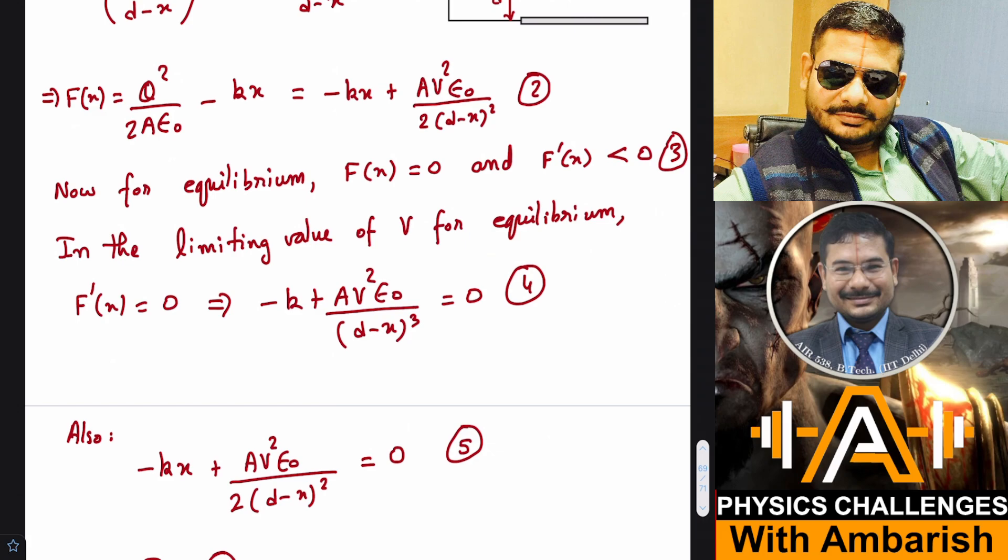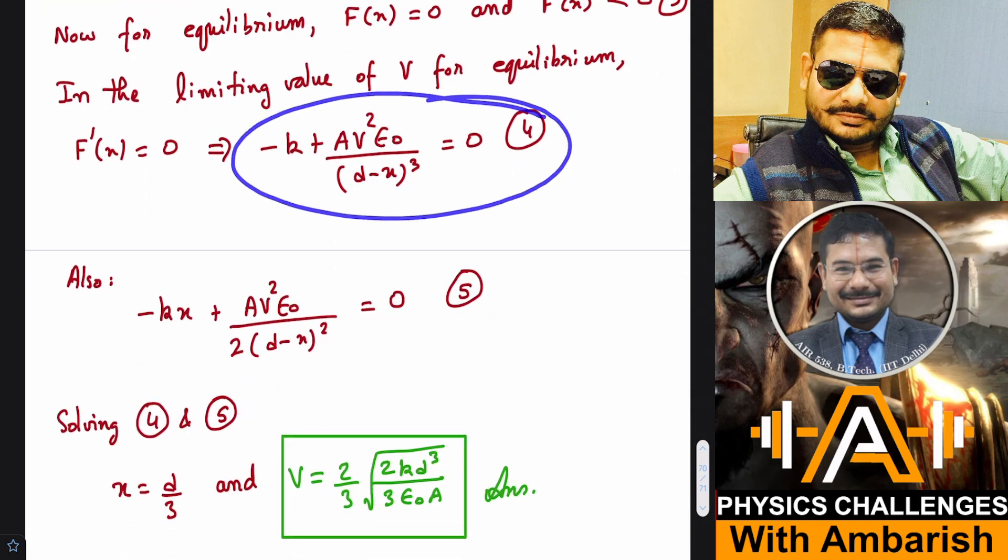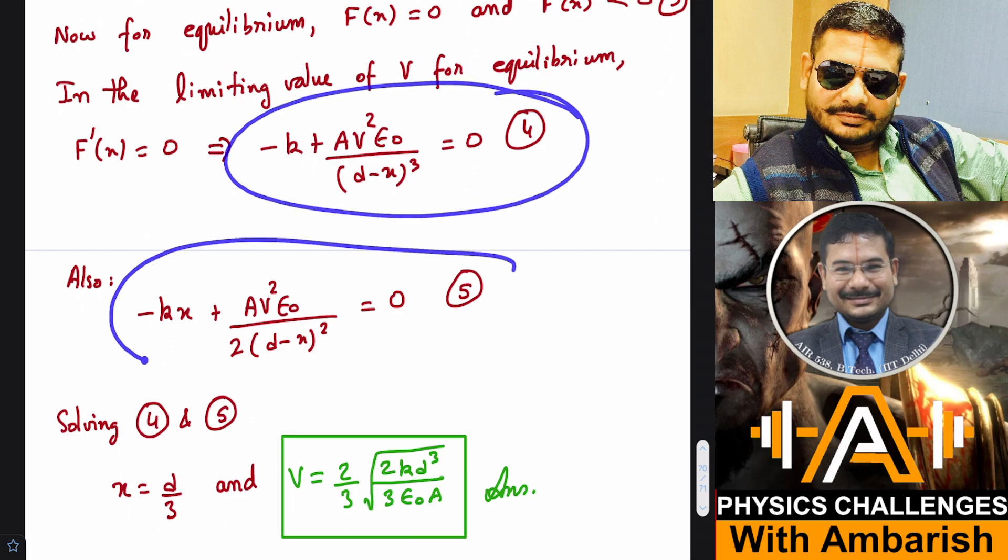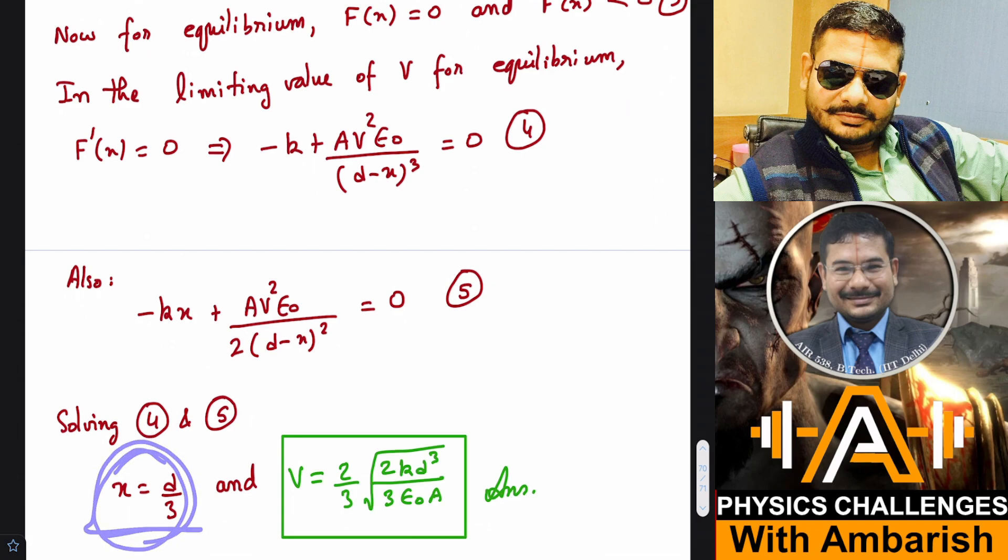Equation four is based on the derivative and equation five is based on making the net force zero. We have two unknowns and two equations—x and V are the two unknowns. You can solve them by substitution and elimination. If you do that, you get x as d by 3, and V comes out to be 2/3 times the square root of (2/3)(Kd²)/(3 epsilon naught A). That's the answer we are interested in.